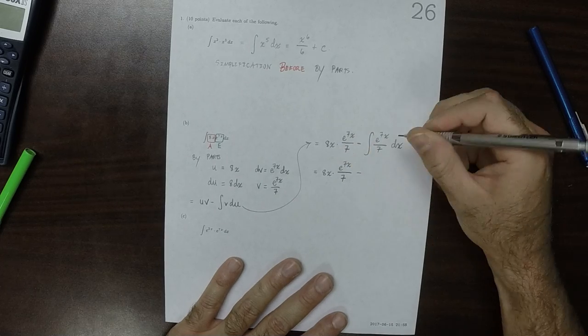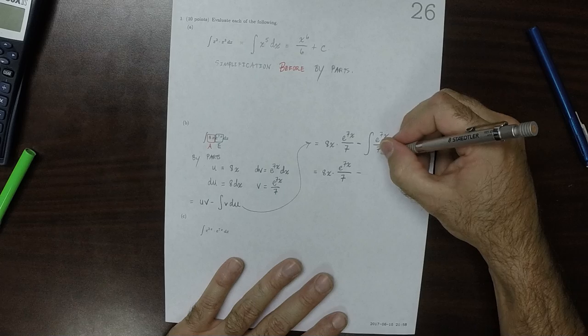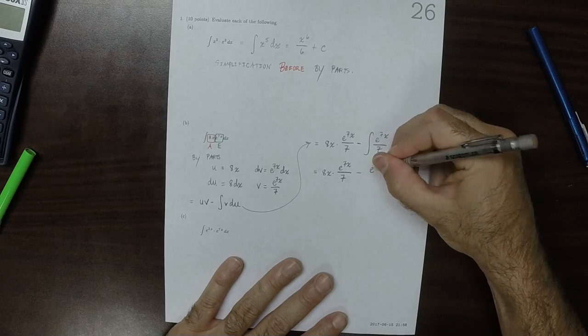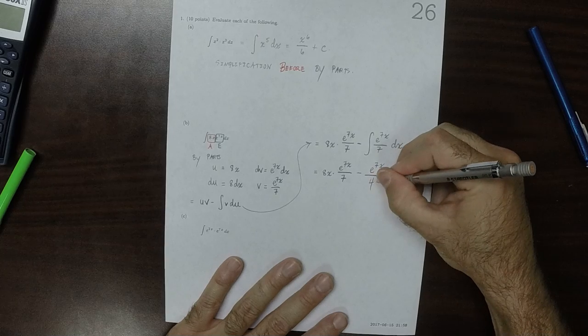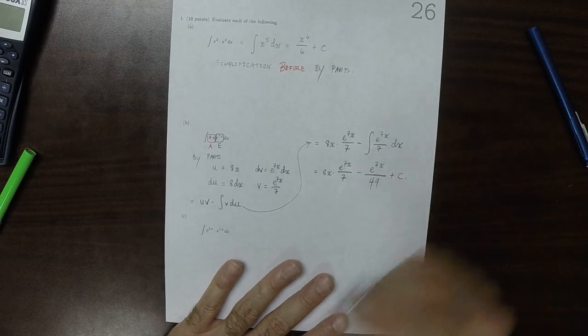And then minus e to 7x over 7, over 7. So e to 7x over 49, plus a constant.